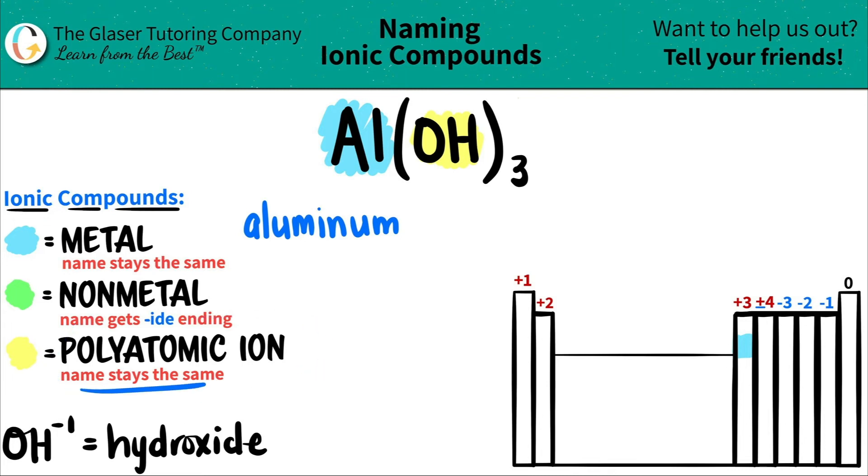And those names always stay the same. So that's why you just got to memorize them. OH is always hydroxide. So I'm going to leave it like that. Hydroxide.